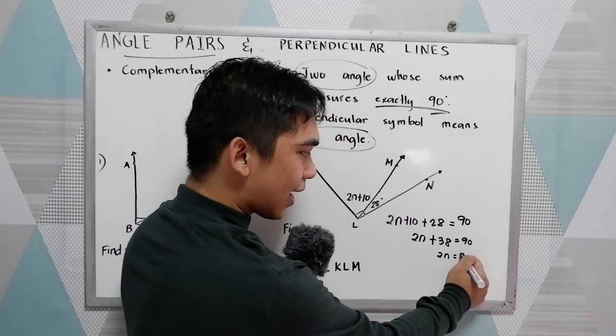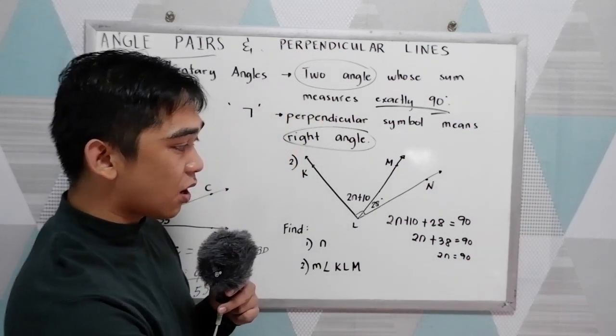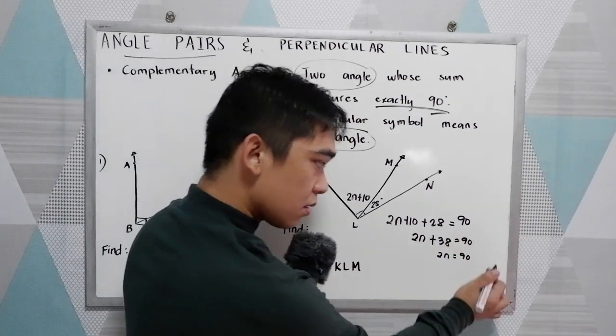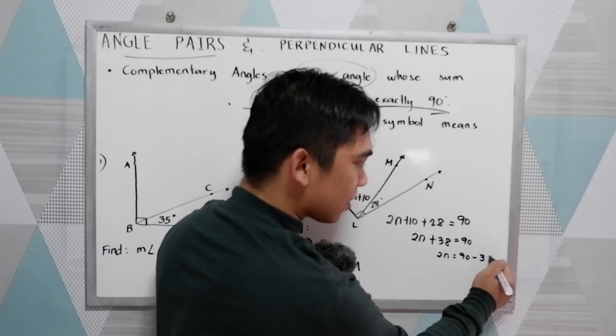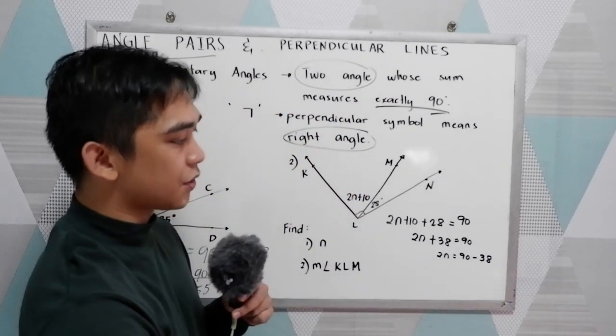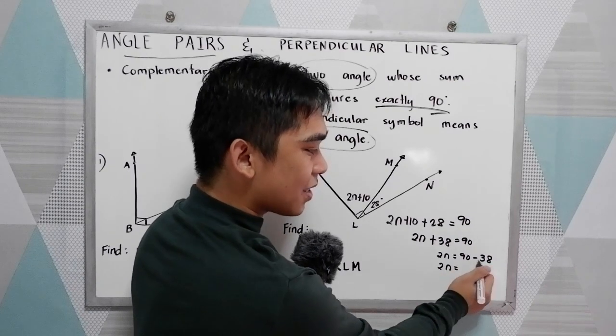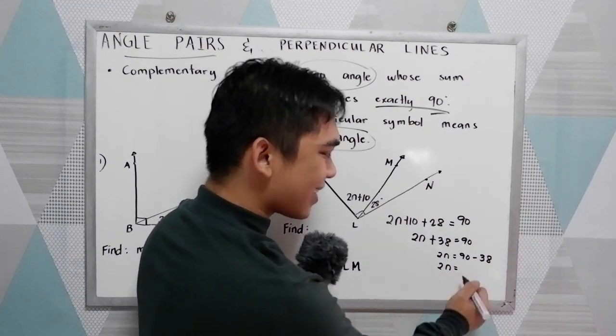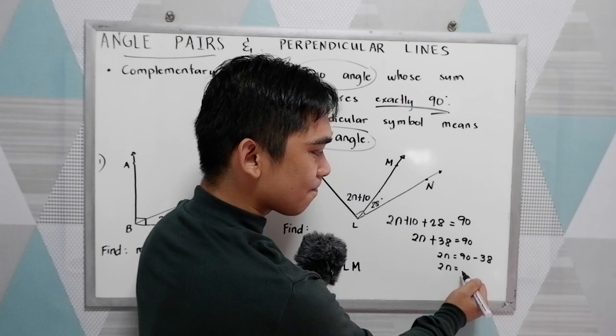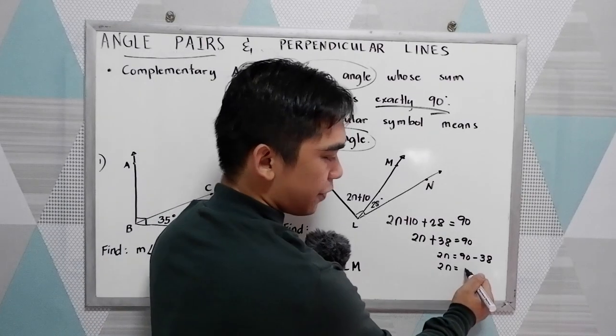Solve for N. So 2N is equal to 90. Using addition property of equality, subtract negative 38 plus negative 38. So we have 2N equals 90 minus 38, that is 52.